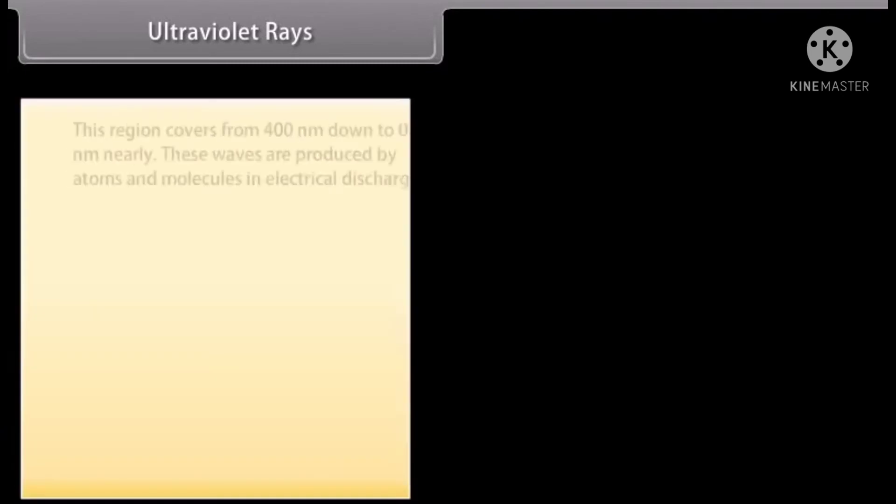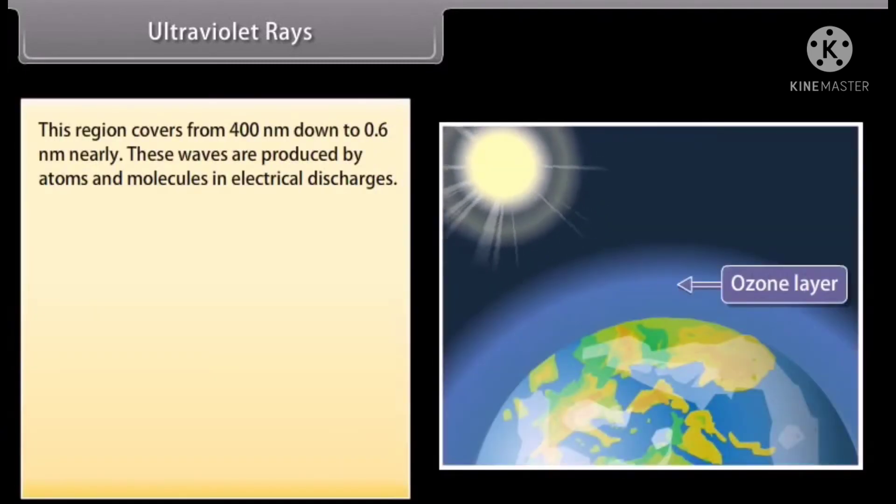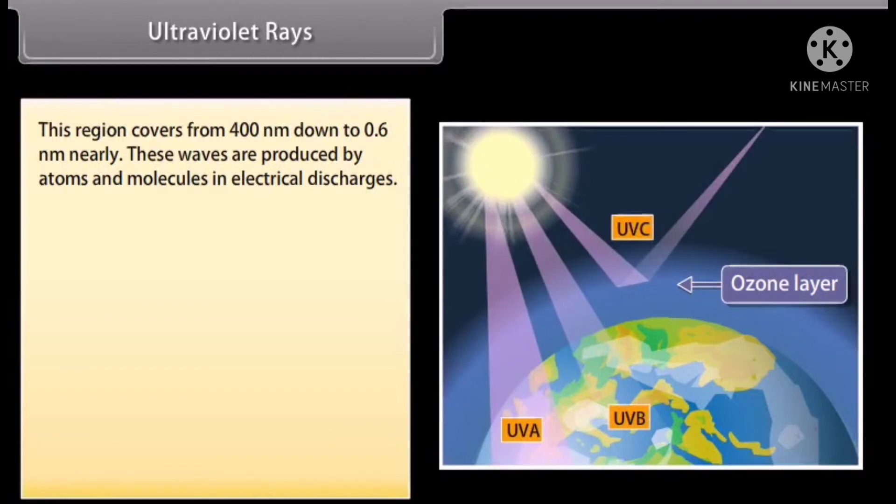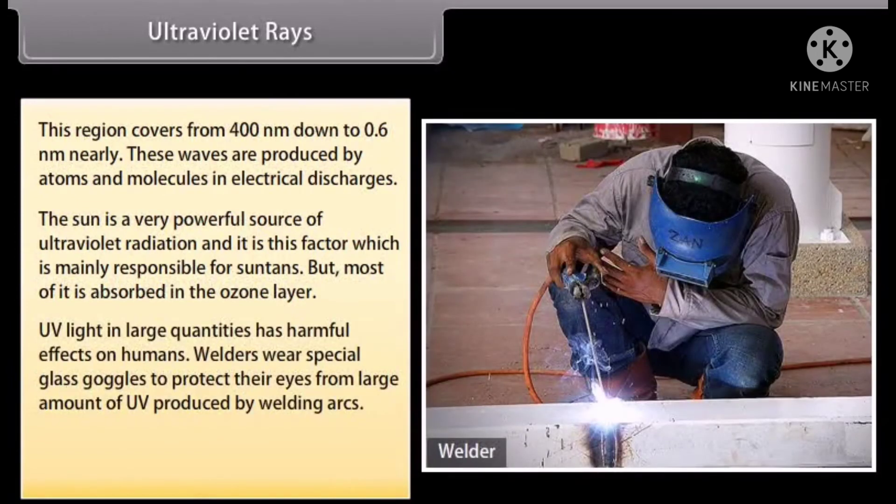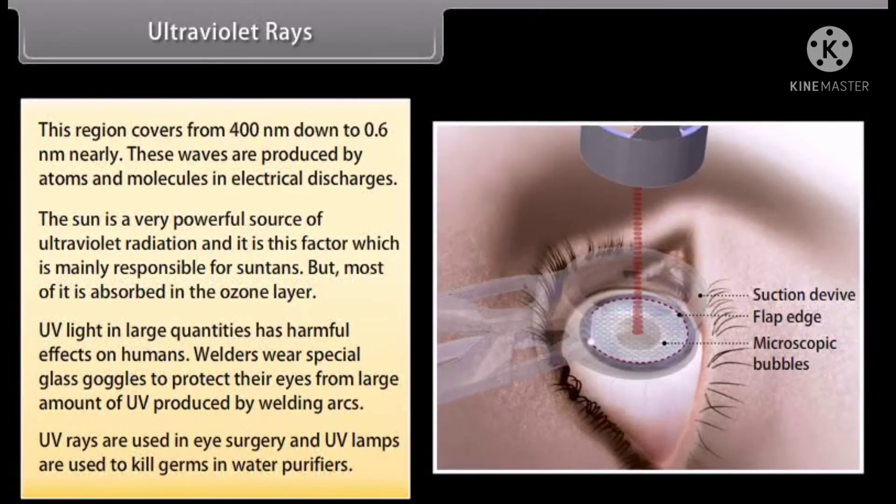Ultraviolet rays: This region covers from 400 nanometer down to 0.6 nanometer nearly. These waves are produced by atoms and molecules in electrical discharges. The sun is a very powerful source of ultraviolet radiation and it is this factor which is mainly responsible for sun tans but most of it is absorbed in the ozone layer. UV light in large quantities has harmful effects on humans. Welders wear special glass goggles to protect their eyes from large amount of UV produced by welding arcs. UV rays are used in eye surgery and UV lamps are used to kill germs in water purifiers.